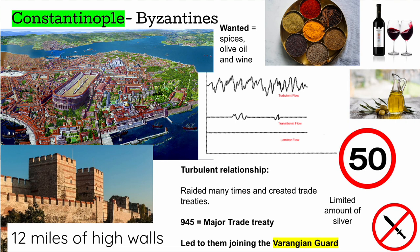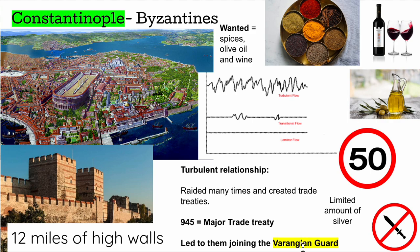Constantinople was quite a different city to Baghdad. It was previously a Roman city with 12 miles of high walls — incredibly hard to raid. The Vikings wanted spices, olive oil, and wine. The relationship with Constantinople was a lot more turbulent, as you can see from this graph. There were many attempts to raid and take over, and treaties were made to stop them. The major treaty in 945 stated that only 50 Vikings could enter, they could only buy a limited amount of silver, and they weren't allowed any weapons.